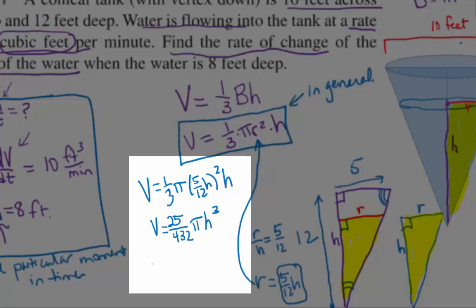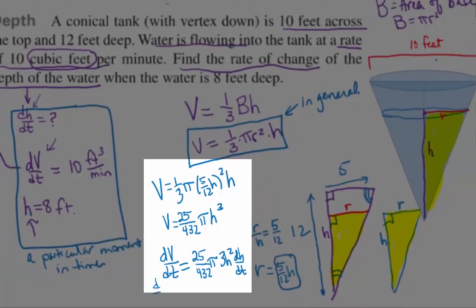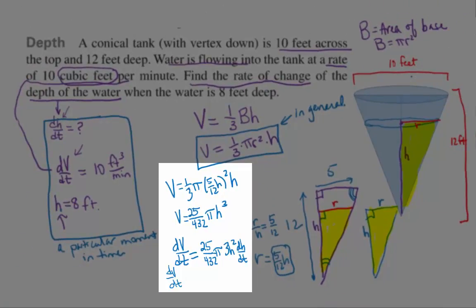Now we have our formula relating V and H. So we're going to use that to get the formula relating DV/DT to DH/DT. So taking the derivative with respect to time of both sides, the coefficients stay the same, 3H squared DH/DT. DV/DT equals 25 over 144 pi H squared DH/DT.